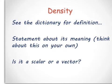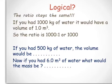Now is density a scalar or a vector? Find out for yourself from the dictionary. Should be clear. Is it logical that the ratio stays the same? What ratio you might ask? Well, have a look at this. If you had 1000 kg of water, it would have a volume of one cubic meter, so the ratio is 1000 to 1, or just 1000.